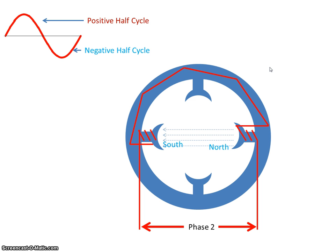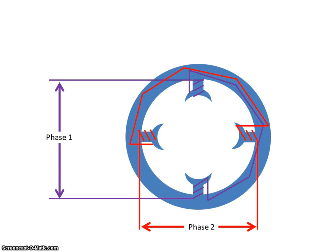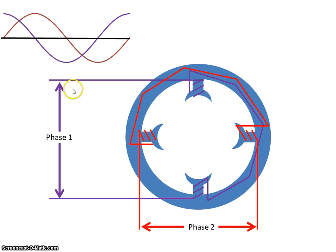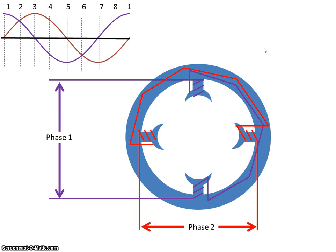So what happens when I combine the two phases? We have phase one and phase two — they are 90 degrees apart and the poles are 90 degrees apart. There's phase one in purple and phase two in red. Let's look at specific times: we're going to look at points 1, 2, 3, 4, 5, 6, 7, and 8, and then the cycle repeats itself back to one.